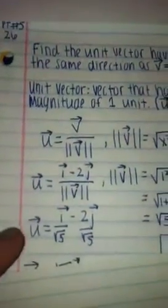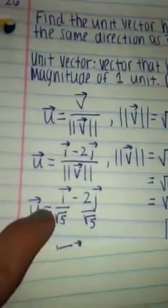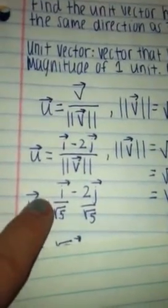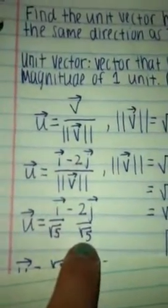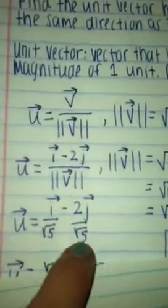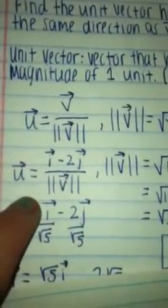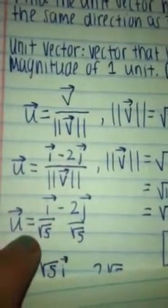And then the unit vector is going to be equal to vector i over absolute value of 5 because you can make them two different fractions. So it's going to be vector i over square root of 5 minus 2 vector j over square root of 5.